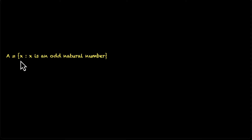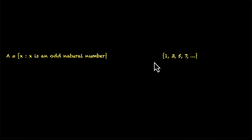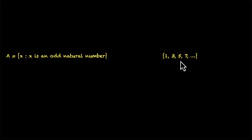Let's say we have this set x such that x is an odd natural number. Odd natural numbers are 1, 3, 5, 7, and so on — this is a list where elements do not end. This list never ends. So how many elements do we have? In this case we have infinite elements because the list never ends.